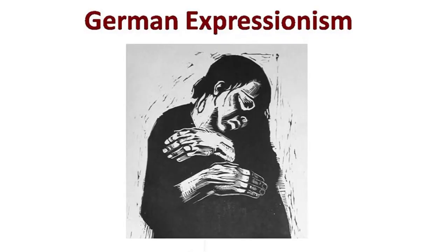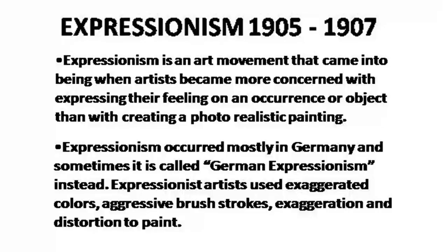But because of its possibilities, because of the power of the movement, it soon starts spreading almost all over Europe. Though due to the origin of its place, the location, the term 'German' is always associated with Expressionism. But the idea of Expressionism as a movement became a global phenomenon. In terms of the movement, it started around 1905 and 1907 and it went on for more than a decade.